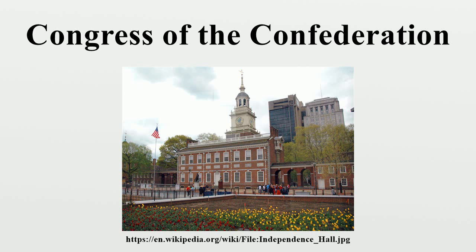The War of Independence saddled the country with an enormous debt. In 1784, the total Confederation debt was nearly $40 million. Of that sum, $8 million was owed to the French and Dutch. Of the domestic debt, government bonds known as loan office certificates composed $11.5 million, certificates on interest indebtedness $3.1 million, and Continental certificates $16.7 million.